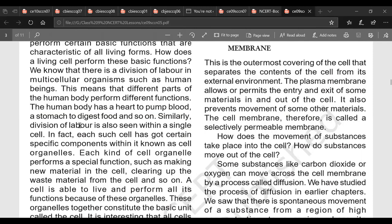Similarly in our body, like different parts of human body perform different functions. Human body has a heart to pump blood, a stomach to digest food and so on. Similarly division of labor is also seen in each cell. There are certain specific components known as organelles. Each organelle performs a specific function such as making new material in the cell, clearing up waste material and so on. So cell is able to live and perform all the functions because of these organelles. So organelles together constitute the basic unit known as cell. So here you can give a heading: how does division of labor take place in case of cells?